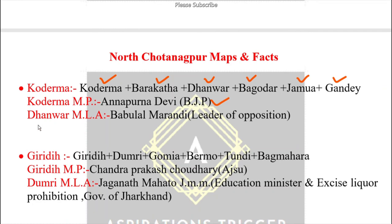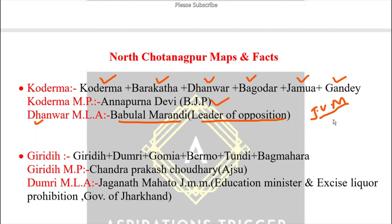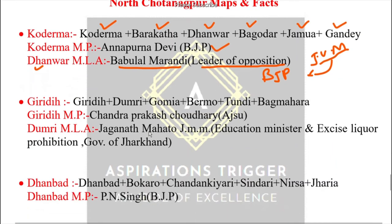One more important data about Koderma: Dhanwar's MLA is Babulal Marandi, who is currently the Leader of Opposition in Jharkhand. Until recently he had a separate party, JVM (Jharkhand Vikas Morcha); he was also the first Chief Minister of Jharkhand. His party JVM was later merged back into BJP, and now he is the Leader of Opposition.